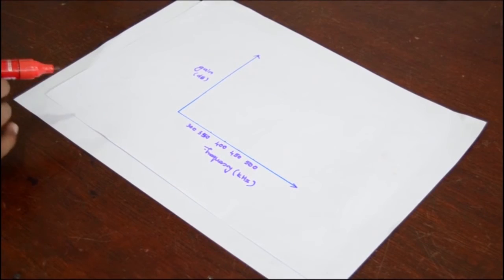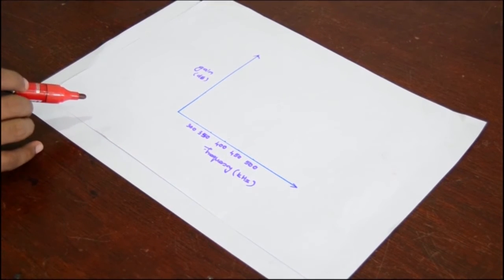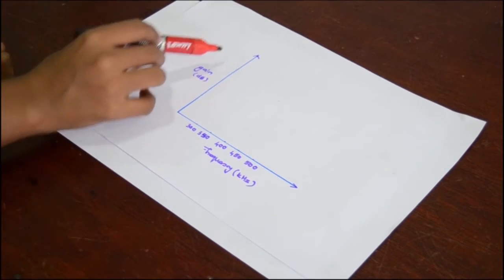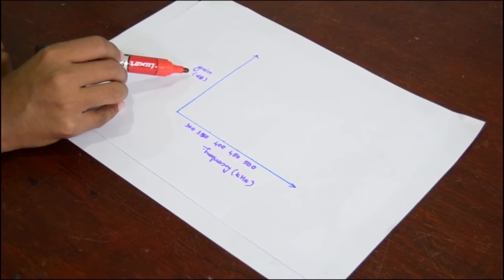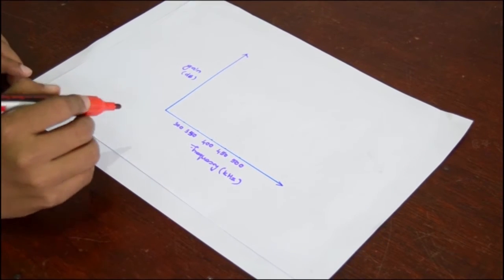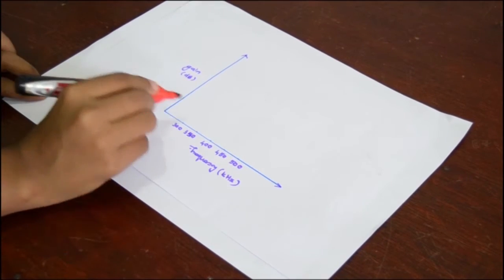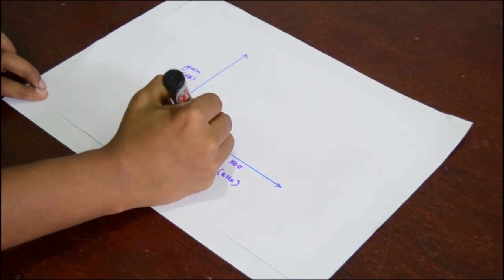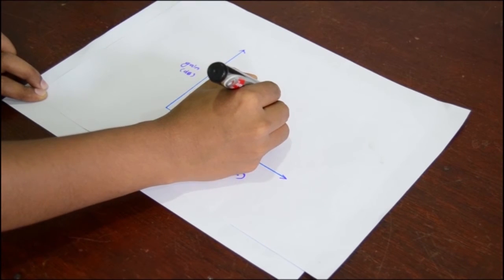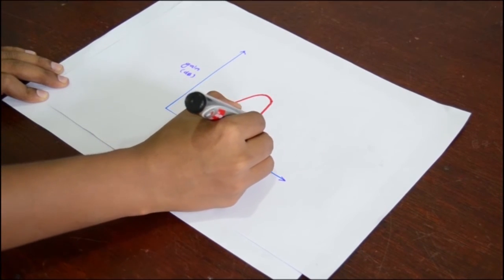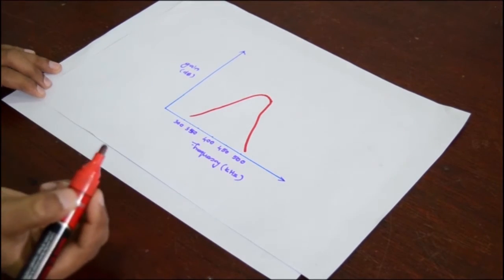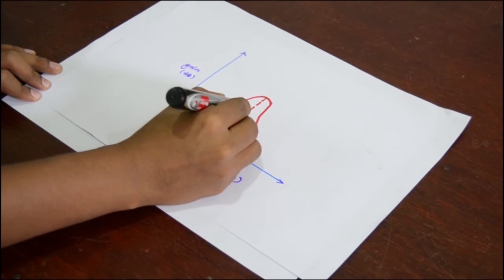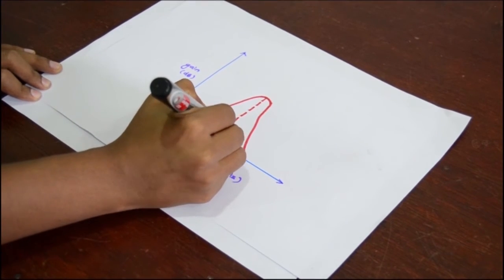Now we plot a rough sketch of the frequency response curve of the tuned voltage amplifier. This is the frequency axis which is in kHz. And this is the gain axis which is measured in decibels. When we plot the frequency response curve, it is like this. The maximum gain is obtained at the frequency 400 kHz.